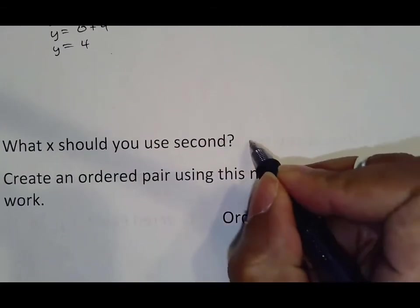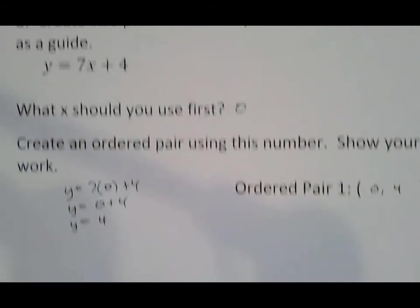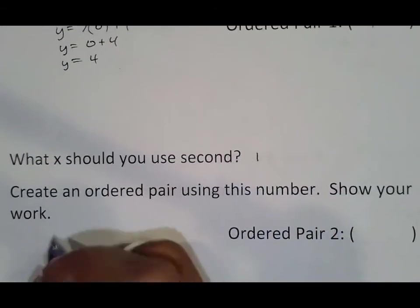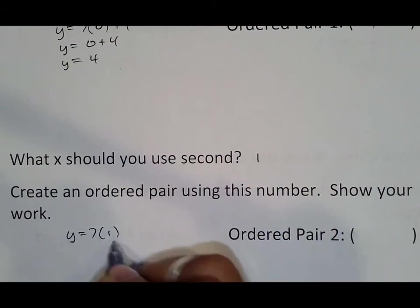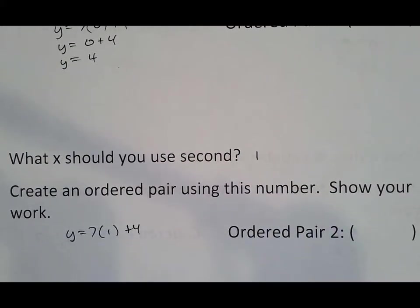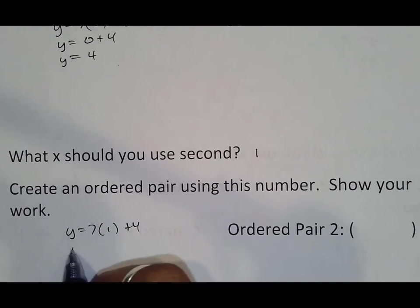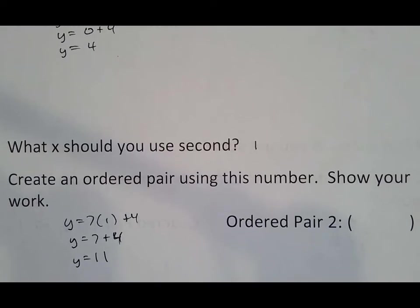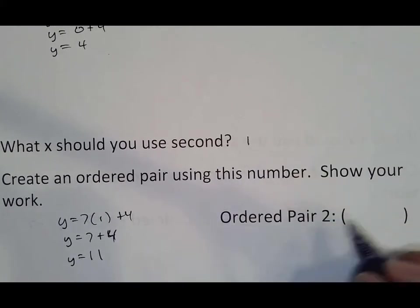What x should we use second? Second is one. So again, we use seven x plus four. Again, same equation. You just got to do it twice. So y equals seven times one plus four. Again, anything times one is itself. And seven plus four is just 11, which means our second point is one comma 11.